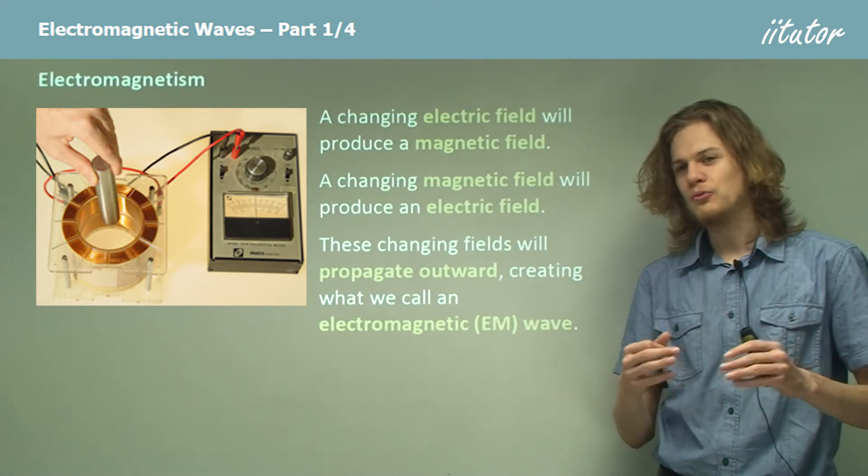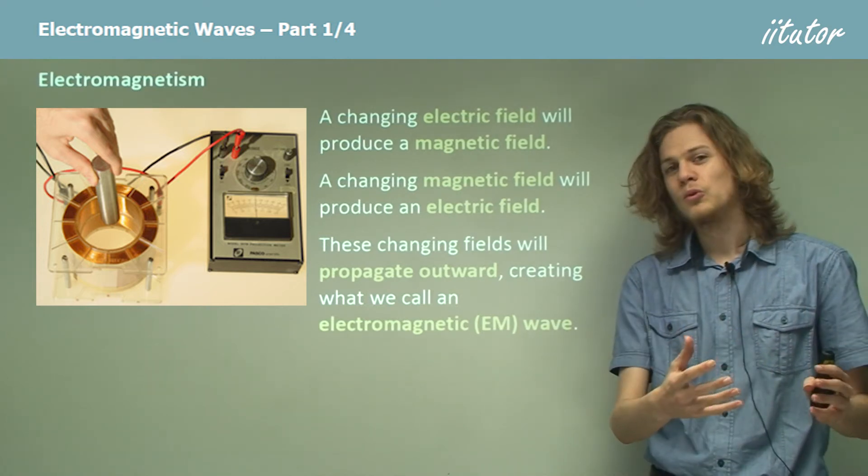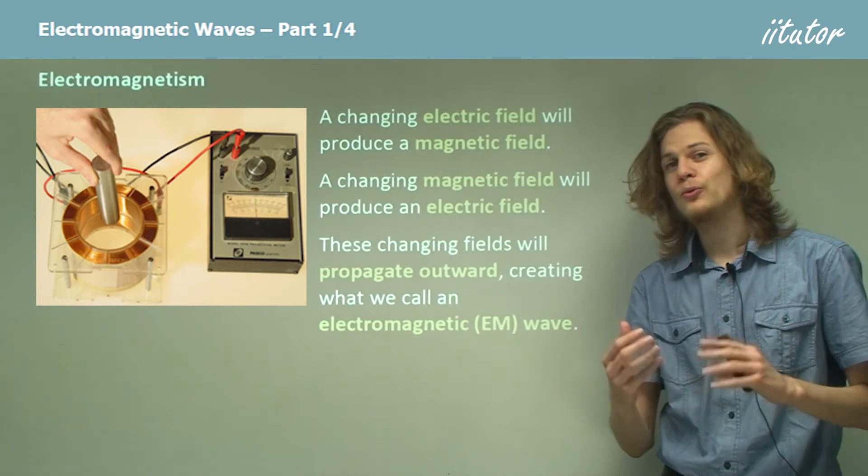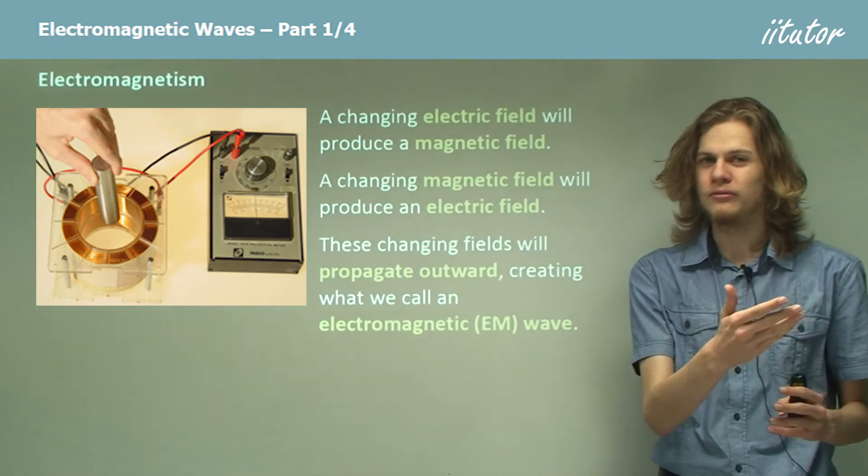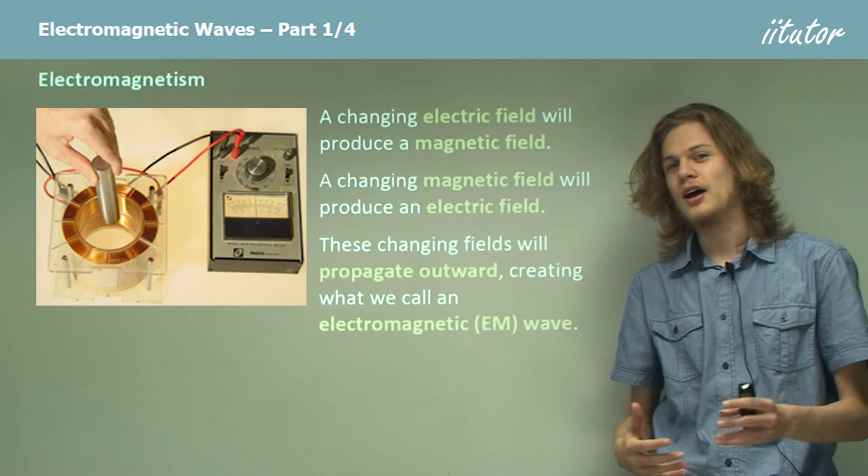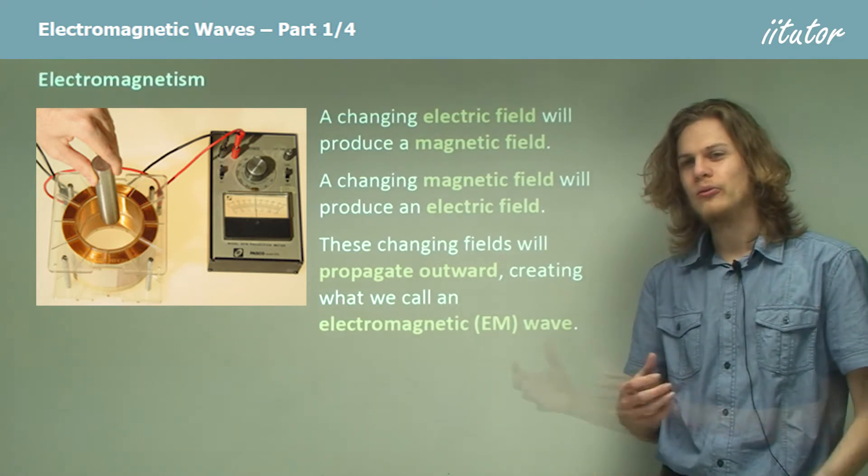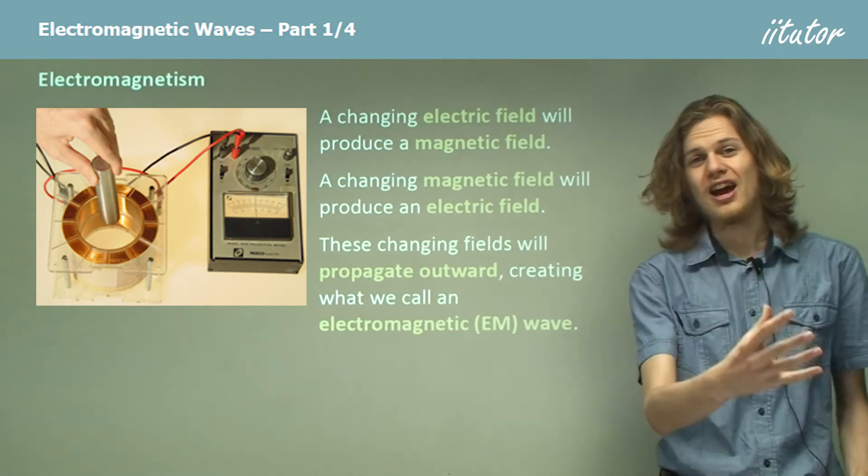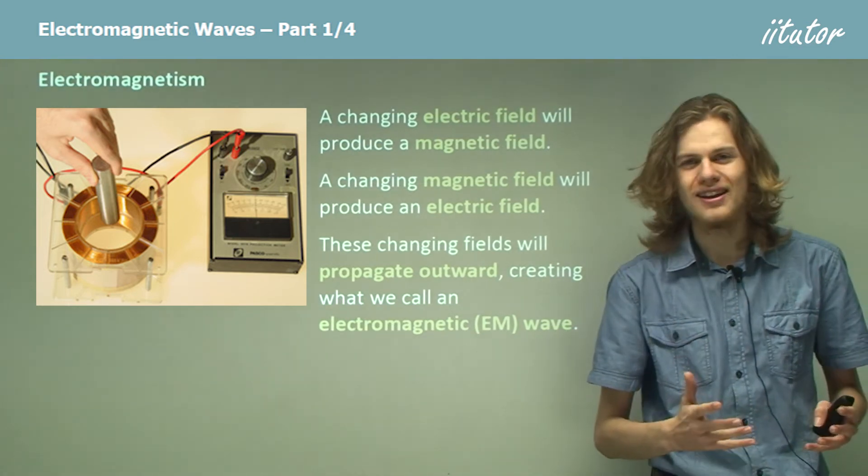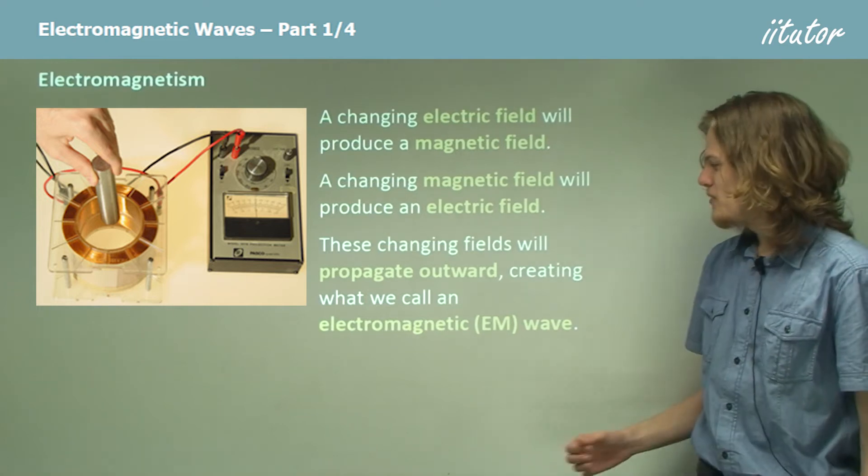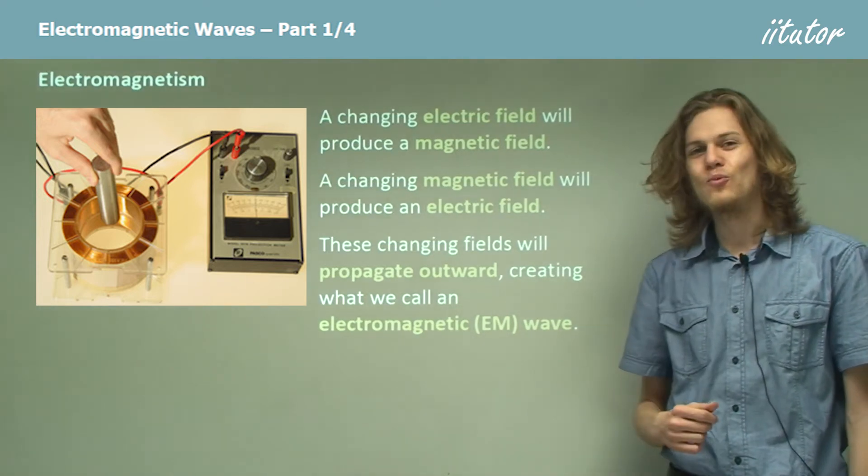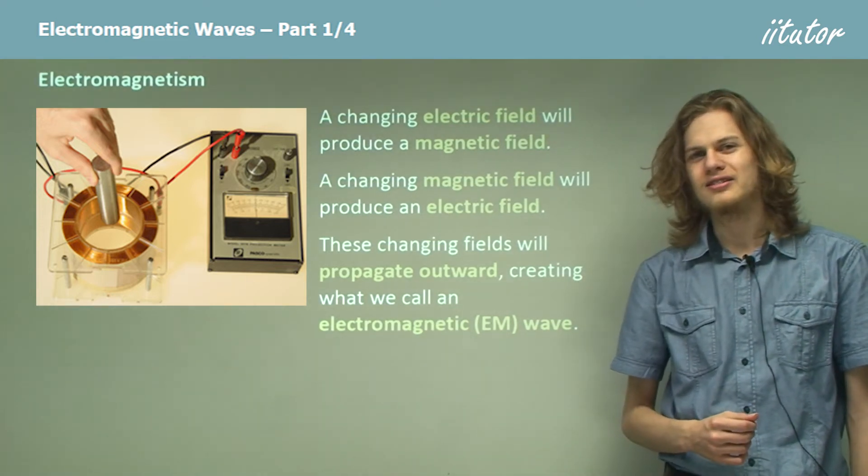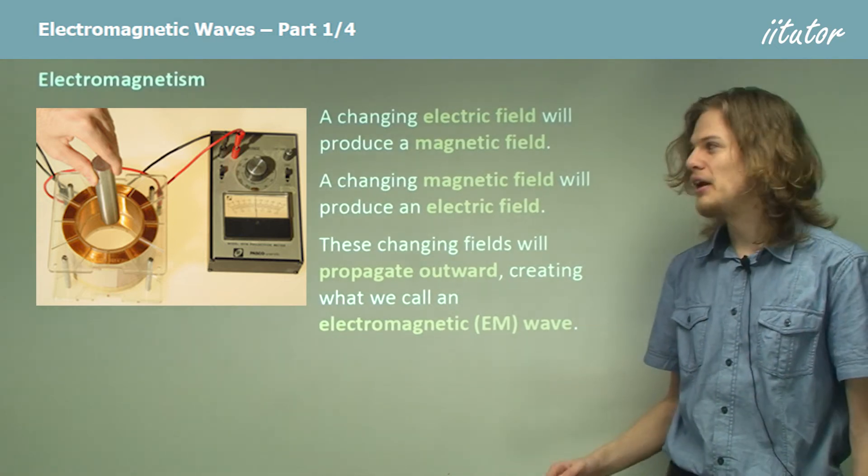But it turns out that a changing electric field that creates a changing magnetic field will also have that changing magnetic field create a new electric field, and that new electric field will create a new magnetic field, and so on. And this whole series of electric fields and magnetic fields will propagate outward very quickly in a wave. And this is what we call an electromagnetic wave. Electromagnetic is such a long word that most of the time I'll abbreviate it on the slide here to EM.